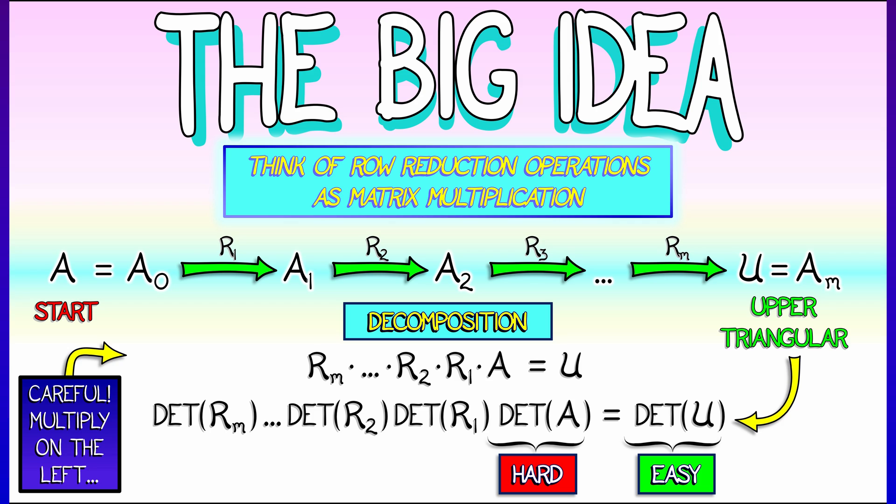So if I want to compute the determinant of A, all we need to do is figure out what matrices correspond to these row operations and how hard is it to compute the determinants of those guys.